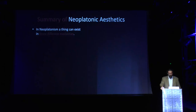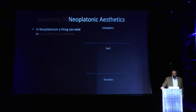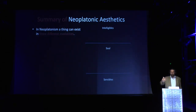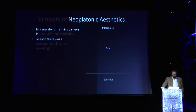In Neoplatonism, a thing can exist in three different modalities: an intelligible existence, a level of the soul, and the sensible world. Each human being exists on the physical plane, we have a soul, and we also have an intellect. It's not so much that these are things within us — we are within these three different levels of existence. To each level there was a corresponding faculty: the intellect for the intelligible realm, the imagination for the soul, and the senses for the physical world.